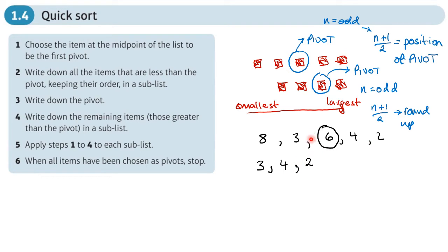The 3 gets pushed toward the end, and the 4 and 2 move in next to the pivot. There were no numbers on the right side bigger than 6, but 8 needs to move across next to the outside. Any numbers bigger than 6 always stay on the right side of the pivot. This creates two new sub-lists either side of the pivot.